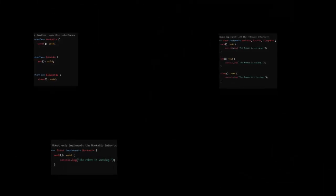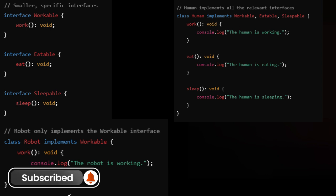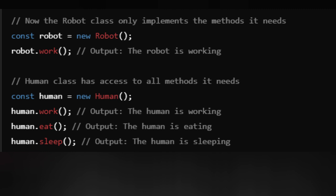To adhere to the Interface Segregation Principle, we can break the large worker interface into smaller, more specific interfaces. The interfaces are split into workable, eatable, and sleepable, allowing robot to only implement the work method, while human implements all the relevant methods. This prevents overloading clients with unnecessary functionality.